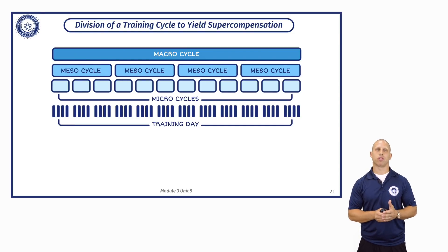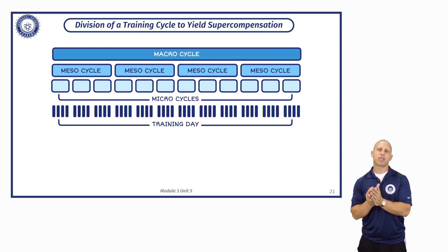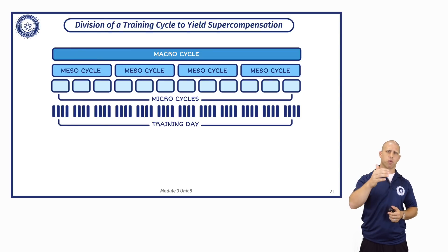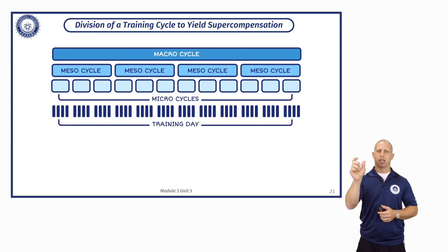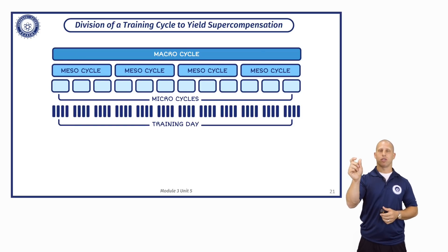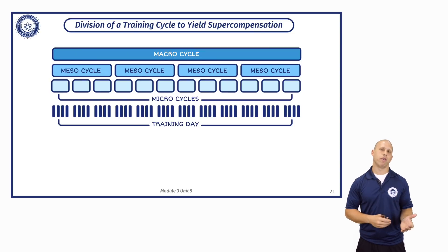Underneath mesocycles we have microcycles — three microcycles within a mesocycle. That's where we really allow for variation. In the undulating model, if a microcycle is an individual week or two weeks within that mesocycle, that's what creates the wave pattern. For example, within each microcycle: the first week of a mesocycle you do eight reps, the second week seven, the third week six, the fourth week five, and then you taper. The microcycle allows for that variation.